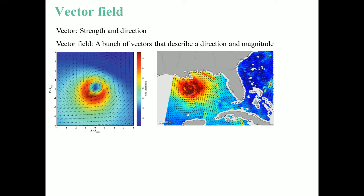A basic vector from previous units has to have a strength and a direction. The strength is determined by how long the vector is — a long vector has greater strength, while a shorter one is weaker. The arrow gives you the direction. Normally we have one arrow to tell us both the strength and the direction.